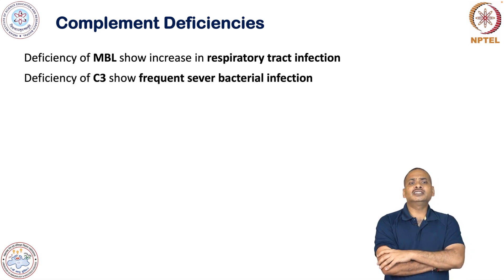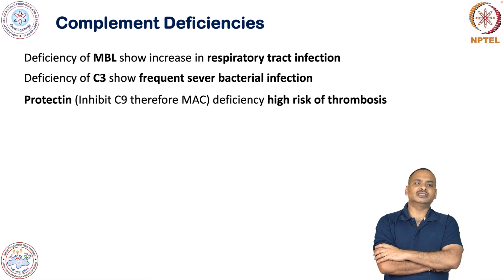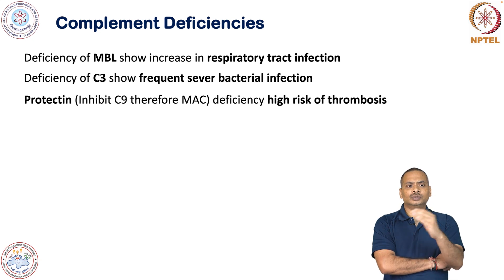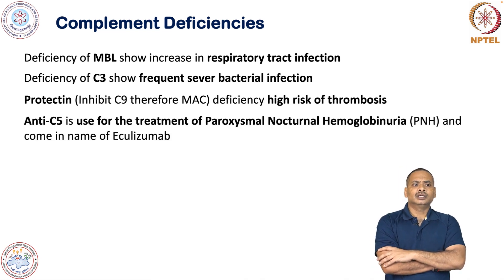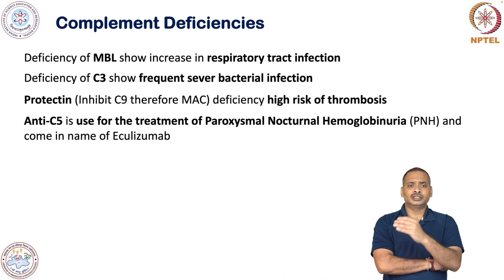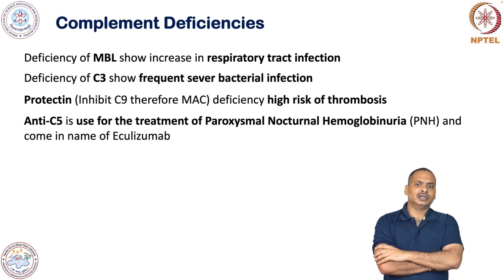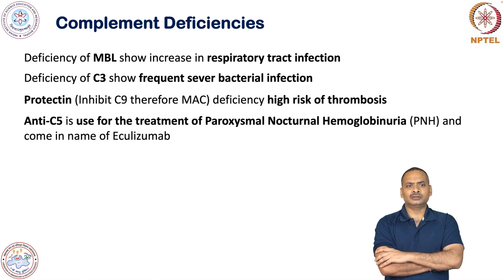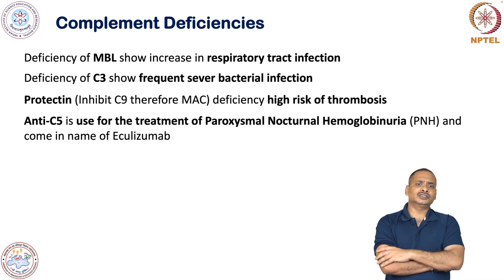Deficiency of C3 results in frequent severe bacterial infections. Protectin inhibits C9 and therefore inhibits MAC formation; deficiency of protectin results in high risk of thrombosis. For treatment of paroxysmal nocturnal hemoglobinuria, anti-C5 therapy is used. The drug is eculizumab — a monoclonal antibody against C5 — used as a therapeutic treatment.